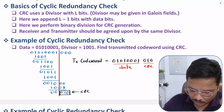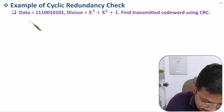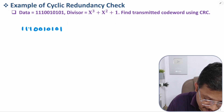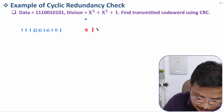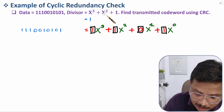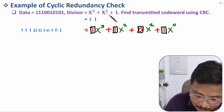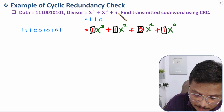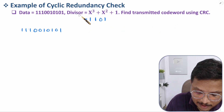Let me give one more example to understand codeword generation. Data is: 1 1 1 0 0 1 0 1 0 1 0 1. The divisor is given as a polynomial. To convert the polynomial to binary: x³ is present so write 1, x² is present so write 1, x¹ is not present so write 0, x⁰ is present so write 1. Therefore, the divisor in binary is 1 1 0 1.